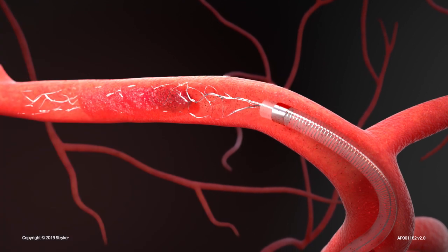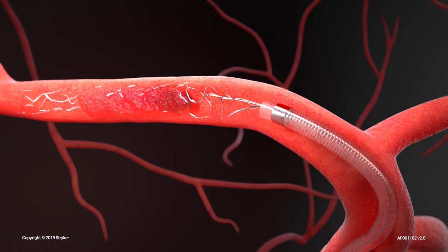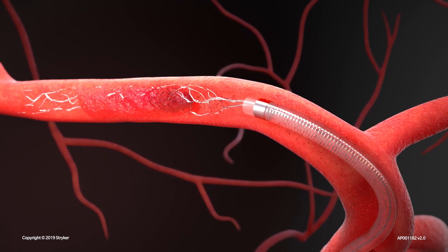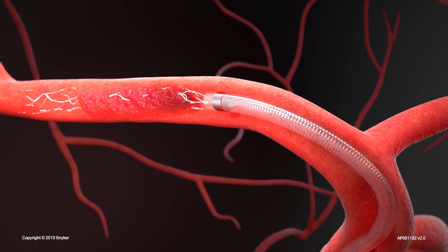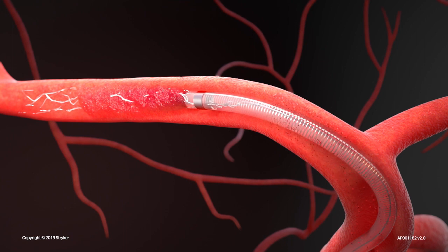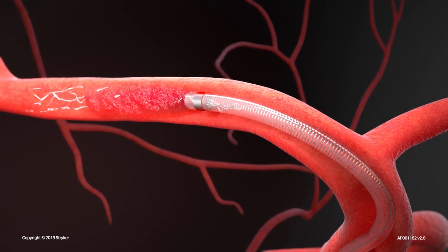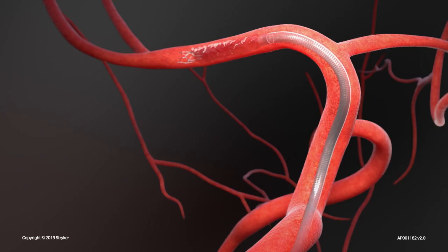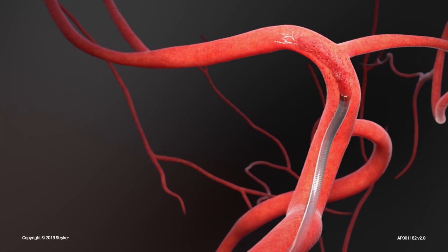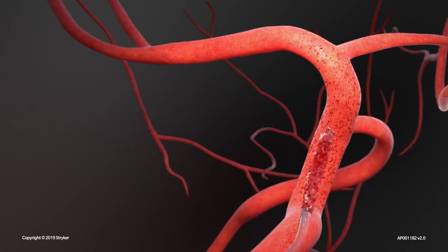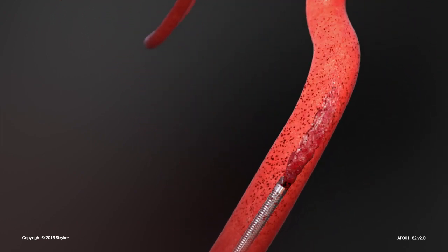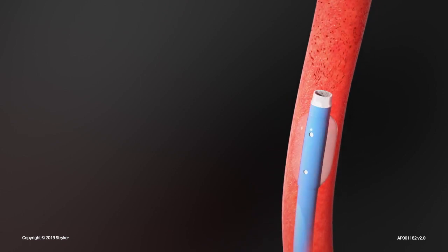Once blood is seen through the tubing, advance the access catalyst distal access catheter towards the clot to ingest and control the proximal face of the clot. Observe flow stasis through the aspiration tubing to ensure clot engagement. The retriever and distal access catheter are then pulled together as a unit while aspirating through the access catalyst distal access catheter and balloon guide catheter.